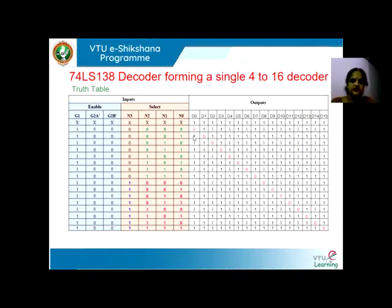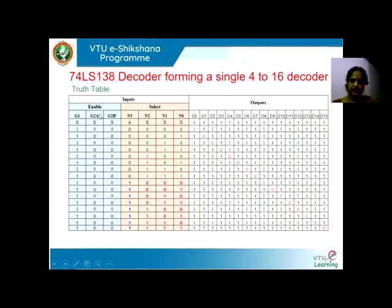For that, first let us write the truth table for a 4-to-16 decoder. We will have similar enable inputs, and we know that when we want to design a 4-to-16 decoder, we need to have 4 inputs and 16 outputs.